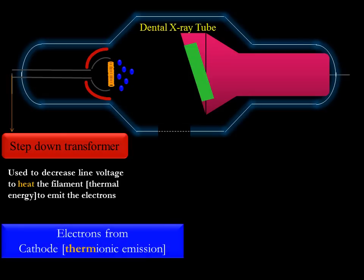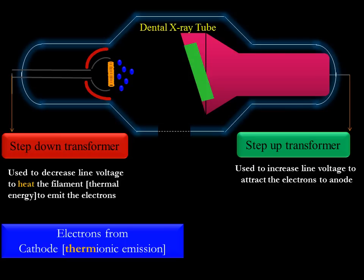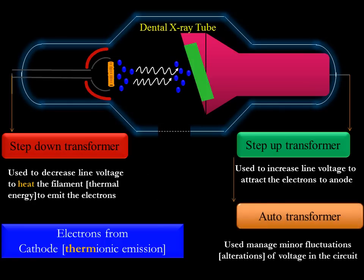The anode of the x-ray tube is connected to a step-up transformer. It is used to increase the line voltage to attract the electrons to the anode, and the auto transformer is used to manage minor fluctuations of voltage in the circuit.